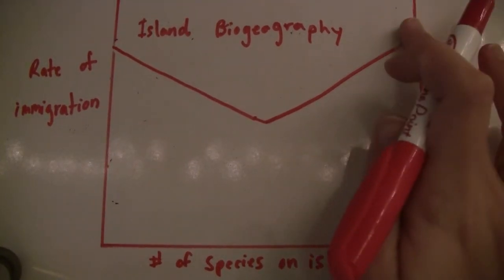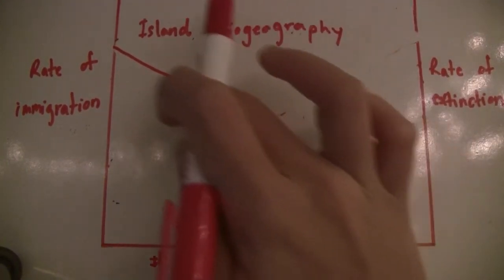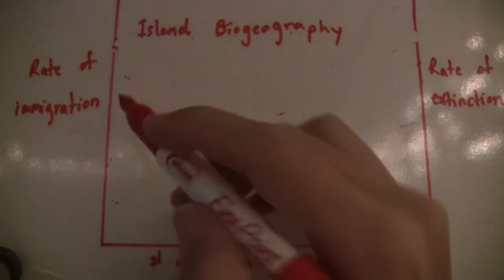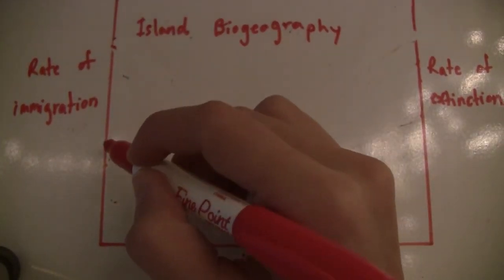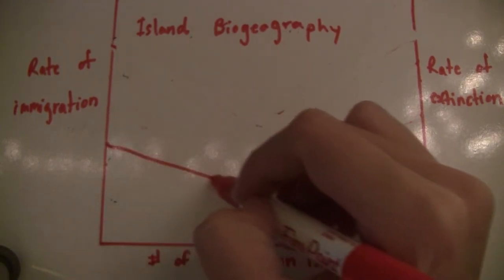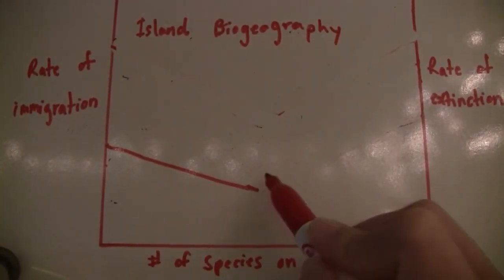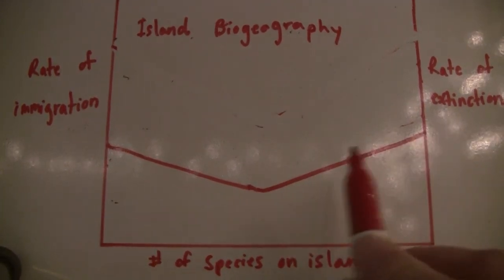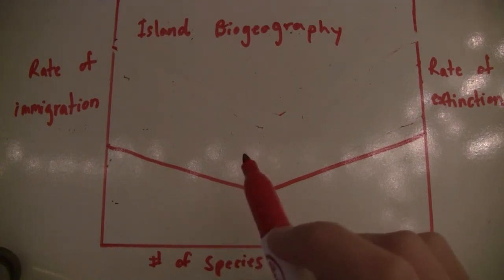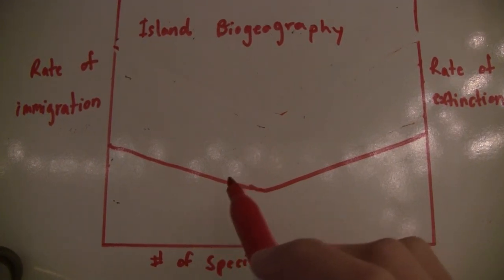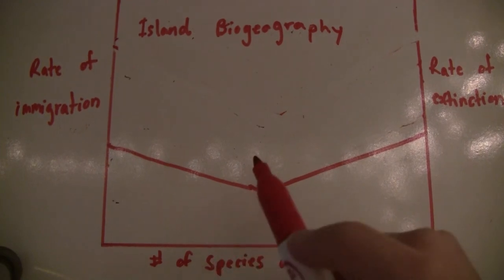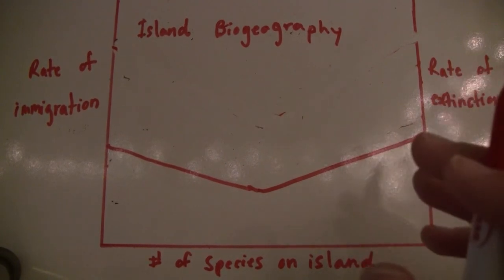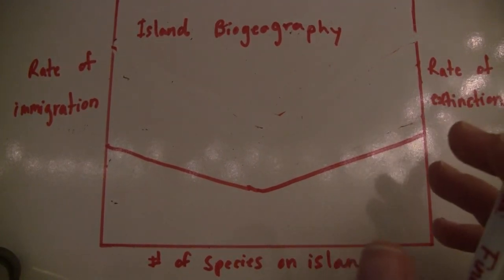Finally, let's look at the combination of a species being far from the mainland — which gives a small immigration rate — and being on a large island, which results in a low extinction rate. This is because the species is far from the mainland so it won't immigrate as much, but because of the large island population, the rate of extinction will be low.